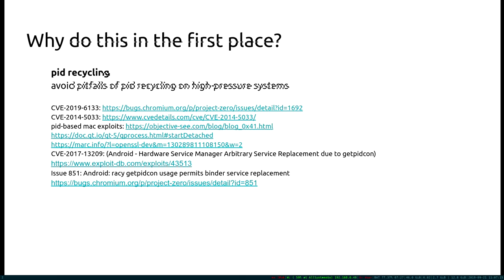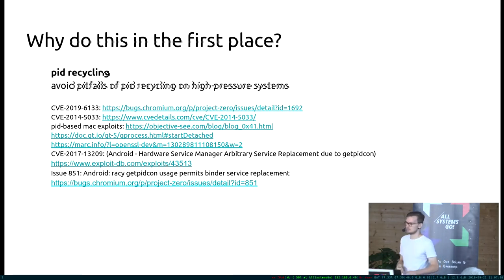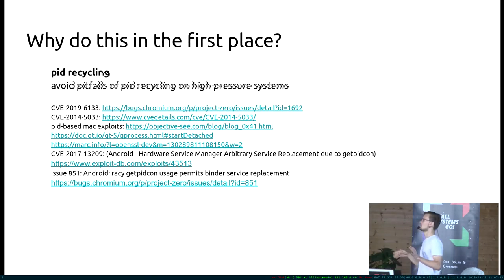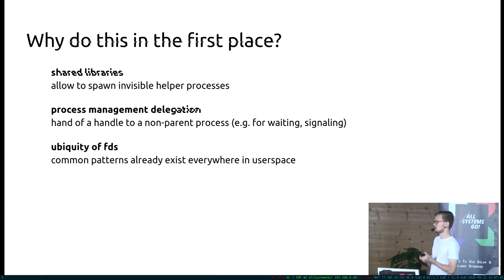One thing you can do to make it at least less likely to run into this issue is bump the maximum number of PIDs to four million, which systemd started doing at some point. You could also probably get around this problem by using UUIDs and not file descriptors. There was a lot of discussion going on about how exactly we should solve this problem. We went with PIDFDs, and I'm going to explain why I think that's a good reason.